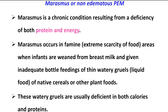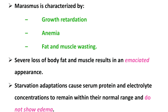Coming to the first nutritional disorder, marasmus — it is due to both deficiency of proteins and energy, but the primary deficiency is energy and the secondary is protein. This is seen in children below one year of age, and marasmus occurs because of early weaning, where instead of breast milk, they are fed a diet containing watery gruels. Main features include growth retardation, anemia, fat and muscle wasting, and the persons look emaciated — very thin and weak. Due to starvation adaptations, serum protein and electrolyte concentrations remain within normal range, and edema is not seen in marasmus.